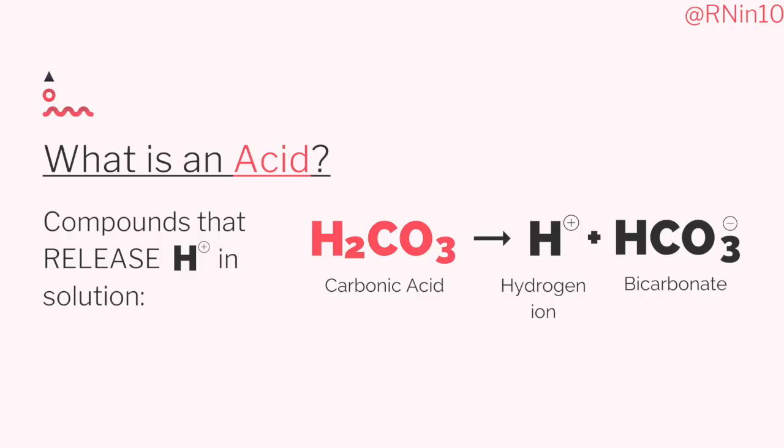Let's start by defining acid. Acids are compounds that release hydrogen ions in solution. In the equation here, carbonic acid is an acid because it releases a hydrogen ion to become hydrogen and bicarbonate. We have a lot of acids produced in our bodies as a byproduct of everyday metabolism — carbonic acid and other metabolic acids like sulfuric acid, hydrochloric acid in our stomach, citric acid, lactic acid, phosphoric acid, and so on. All of these release hydrogen ions.